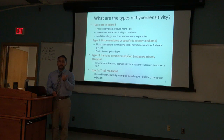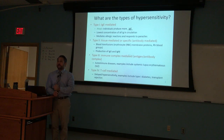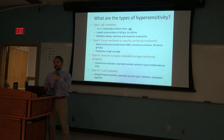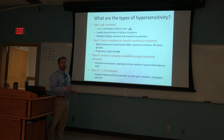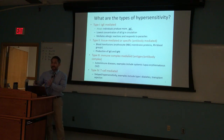We alluded to this back in Unit 1 when we talked about B cells, IgE, IgG, and IgM — the monomers, dimers, and pentamers. We're using some old information from Unit 1. Remember, this class is cumulative.